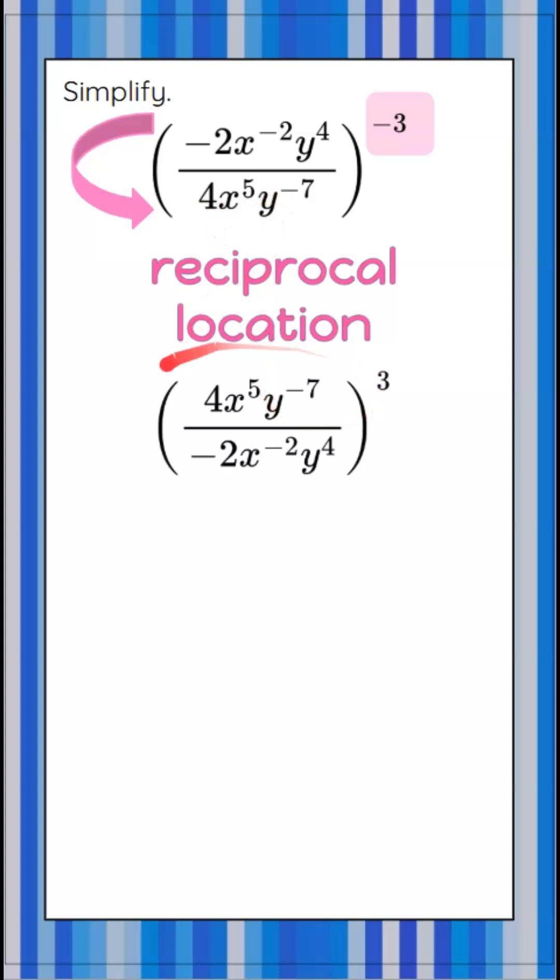4x to the 5th, y to the negative 7th has been flipped. It's in the reciprocal location. And negative 2x to the negative 2, y to the 4th is in the denominator. And now we have positive 3.